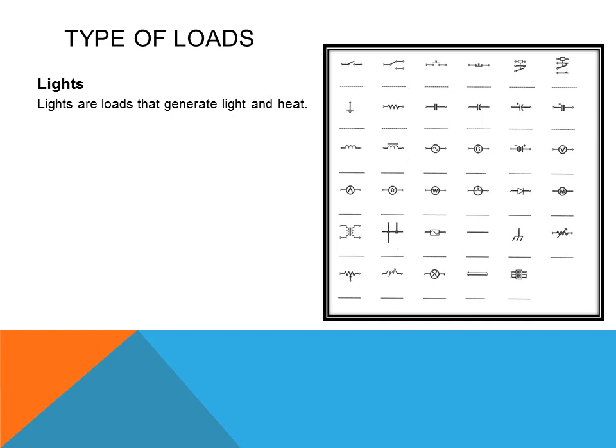Light is a type of load — it consumes energy. A light bulb will produce both light and heat, so the energy consumed generates both. In the symbol chart, you see a light in the top left-hand corner. If different colored lights are used, they will just put the first letter of the color, such as G for green, Y for yellow, or R for red.